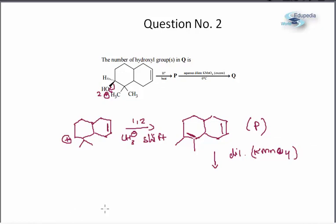So what happens, 2 OH groups come at this position. I will draw the products for you.